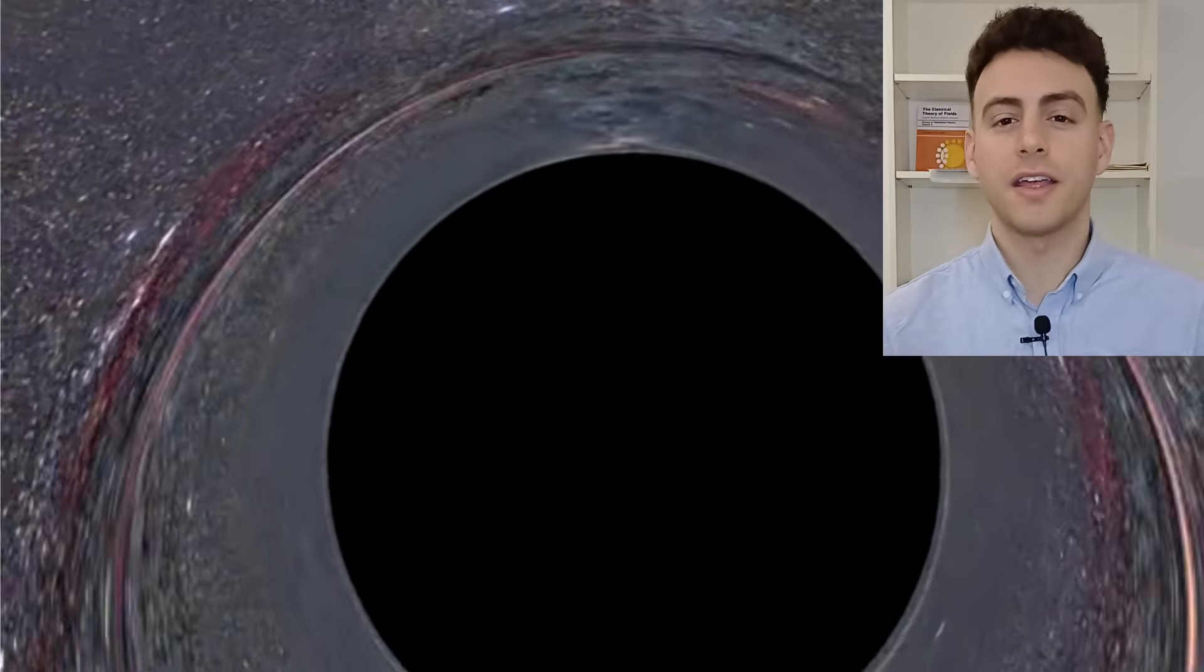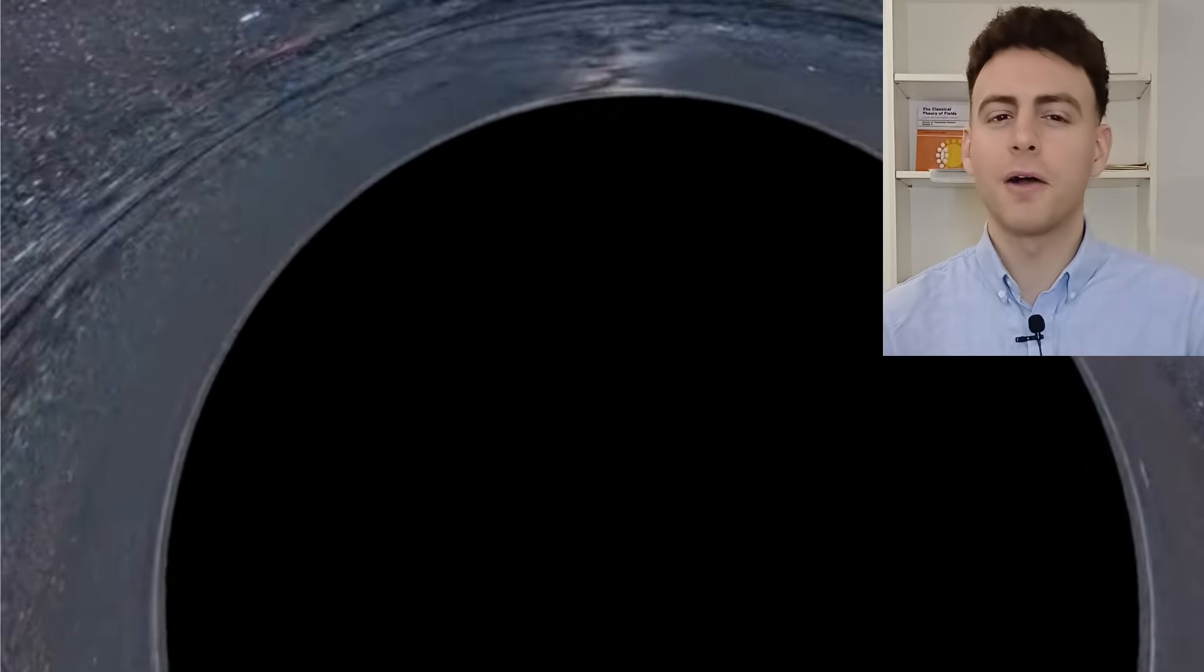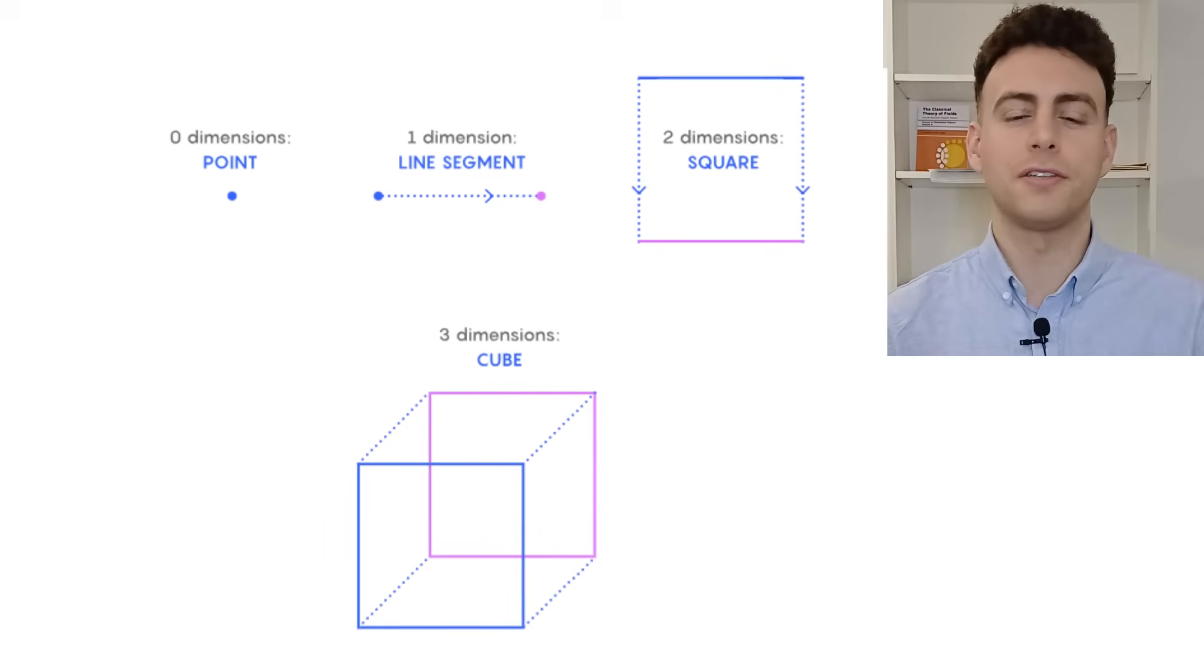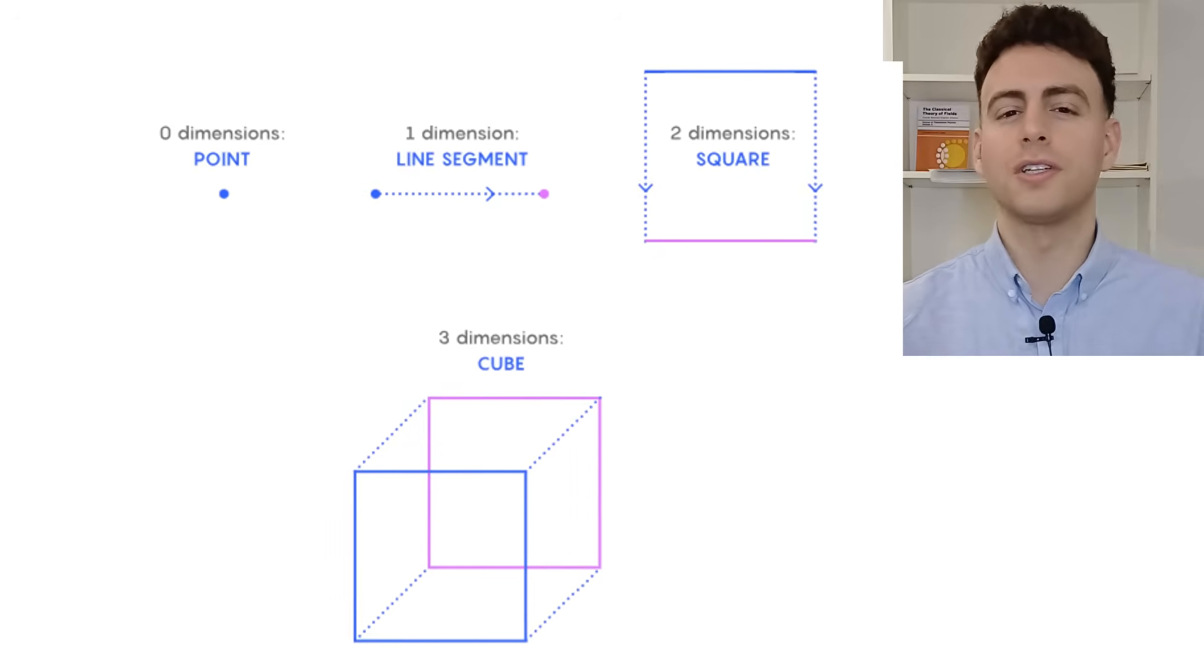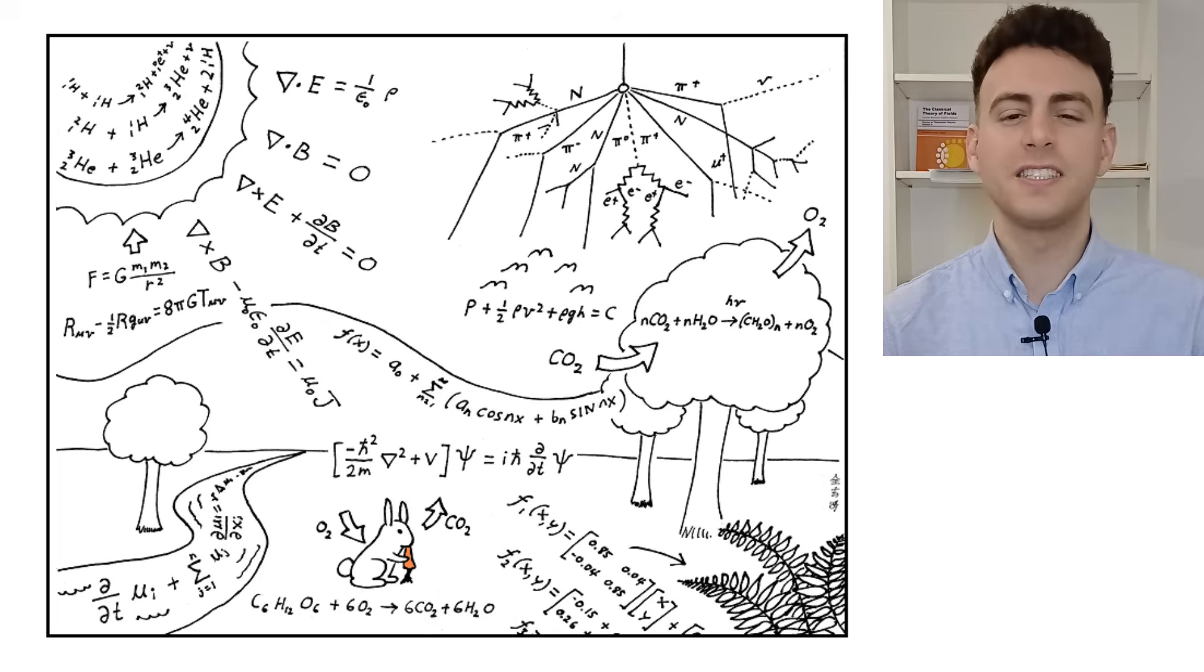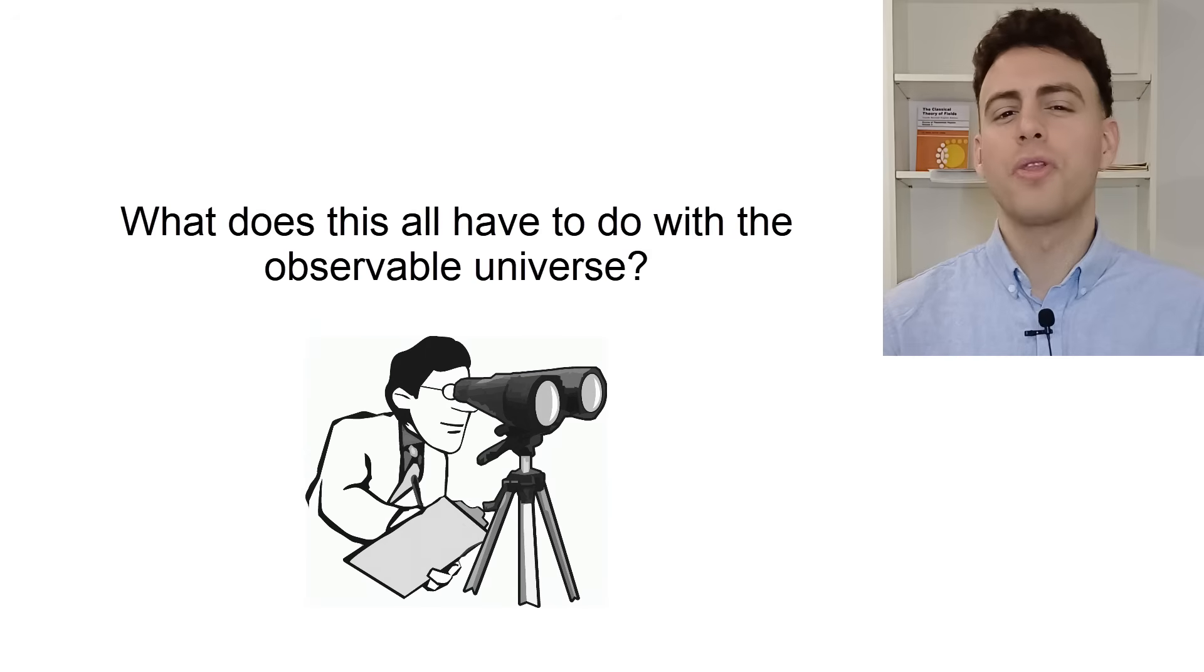We don't know which fields are there inside black holes, if any, and we certainly don't live in 2 plus 1 dimensions or another weird combination of them, with no evidence pointing towards hidden extra ones. Physics is the branch of science concerned with nature, and I can't see any nature in these papers, only mathematics. What does this all have to do with the observable universe?